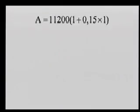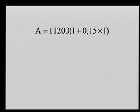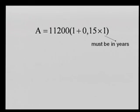Now we apply the simple interest formula to the balance of R11,200. Remember, it's a 12-month period, but the formula always requires years, so we use 1 year. Substituting P = R11,200, r = 0.15, and t = 1 into the formula, the total amount to repay is R12,880.